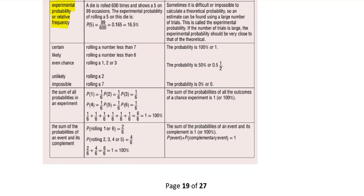These words describe the likelihood of an event occurring, ranging from certain to impossible. If something is certain, it is definitely going to happen — for example, rolling a number less than seven on a dice. Likely means a very high chance but not definite, such as rolling a number less than six — five chances out of six. Even chance means exactly 50/50, like rolling a one, two, or three. Unlikely means there's still a chance but not very much, like rolling a two.